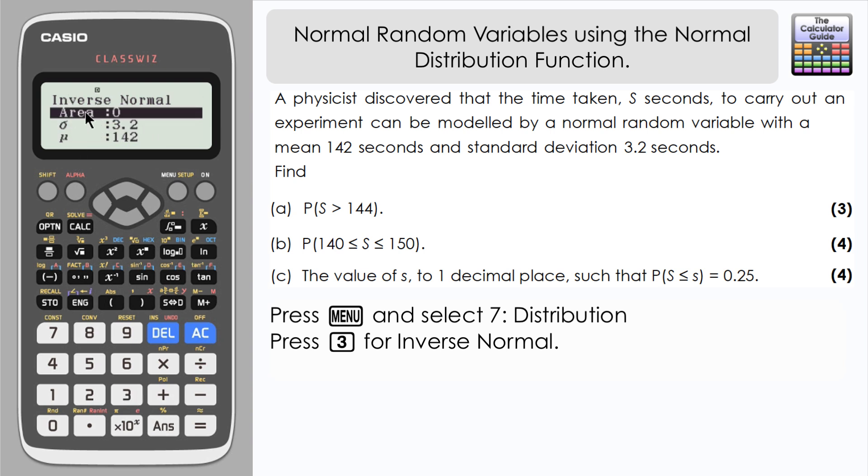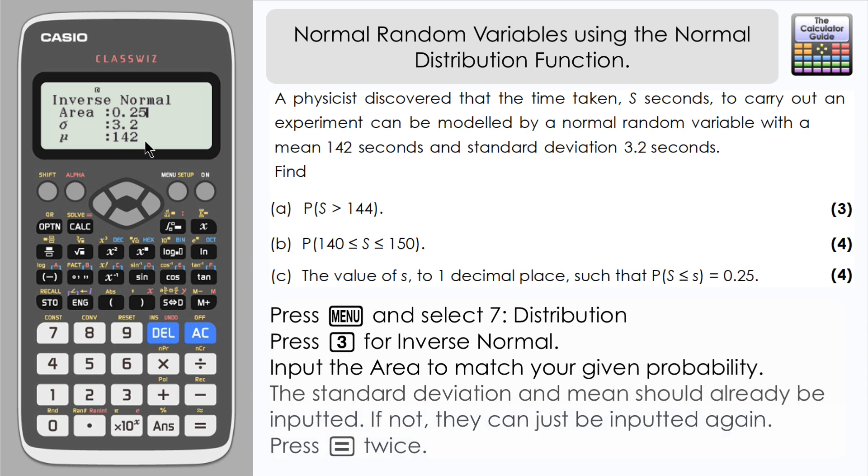Notice how it refers to the area. That's the same as the probability, the area under the graph. In this particular question, that's 0.25. We want our area to equal 0.25. Notice how I've still got my sigma and my mu values from inputting them in the normal cumulative distribution, which is very helpful. It's quite convenient, we can just flip to inverse normal.